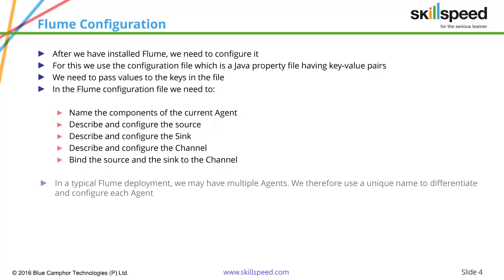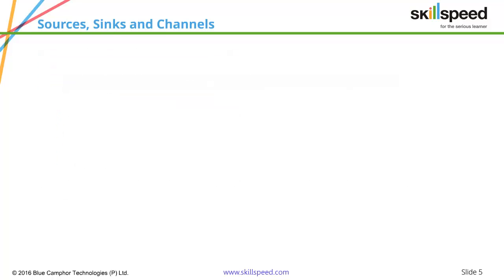In a typical Flume deployment, we may have multiple agents. We therefore use a unique name to differentiate and configure each agent. Here, we can have a look at some of the most common sources, channels, and sinks.